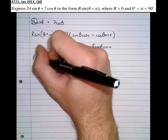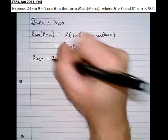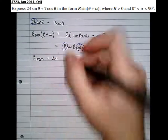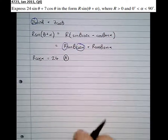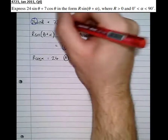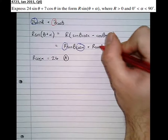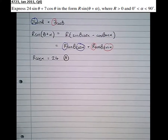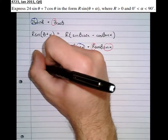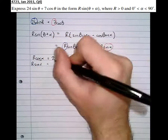So R cos alpha equals 24 — let's write that down and call it equation A. Similarly, the cos theta has been multiplied by 7 here, and by R sine alpha in the expanded form, so R sine alpha must equal 7.